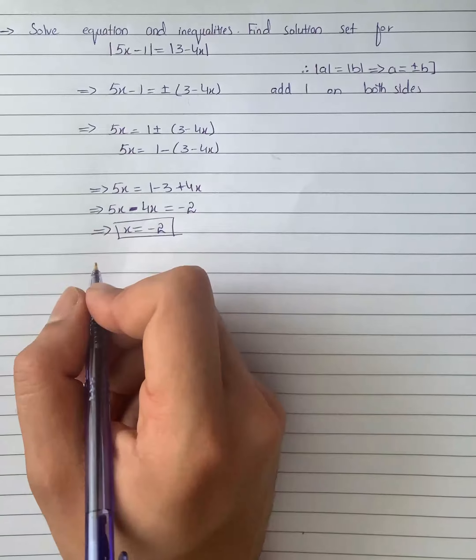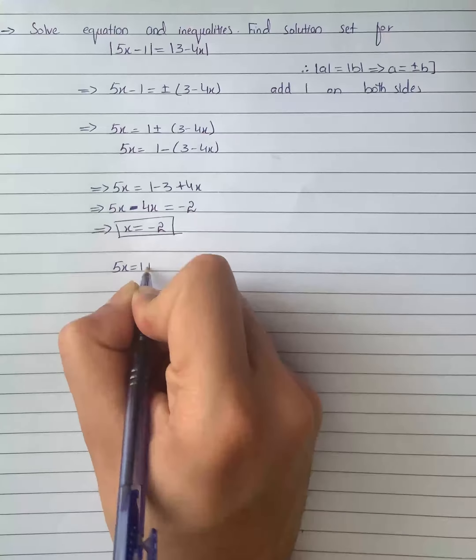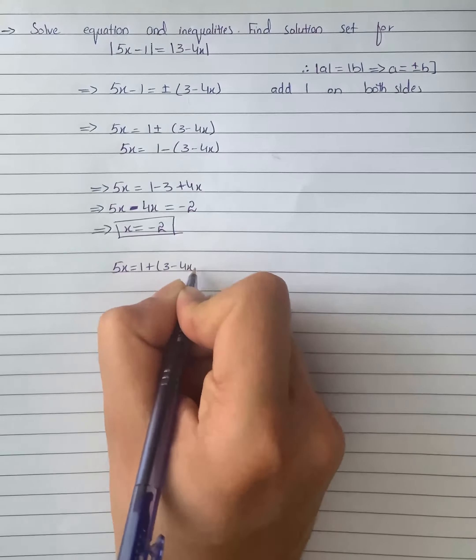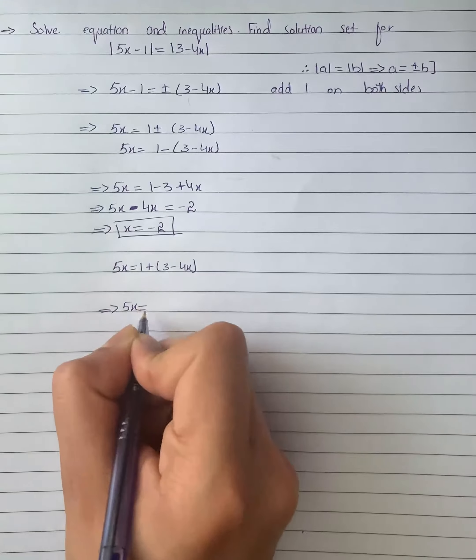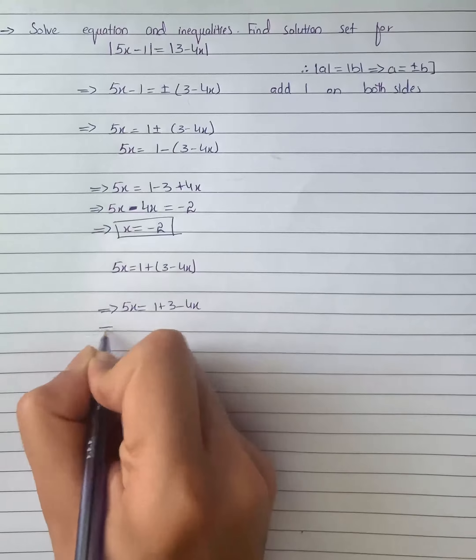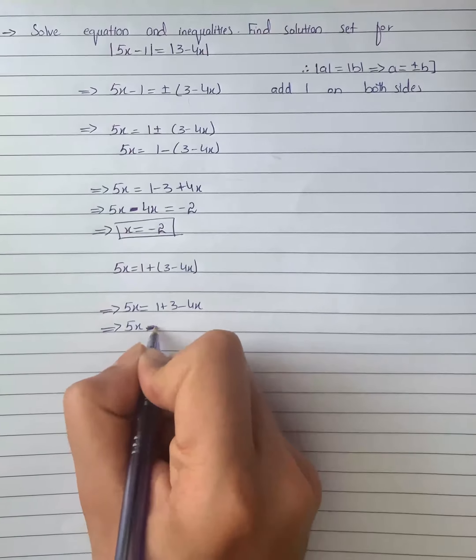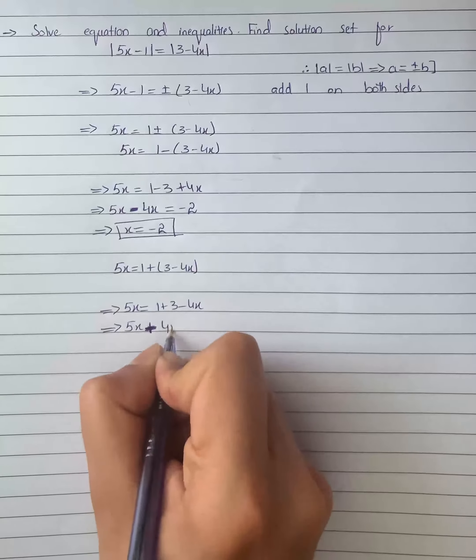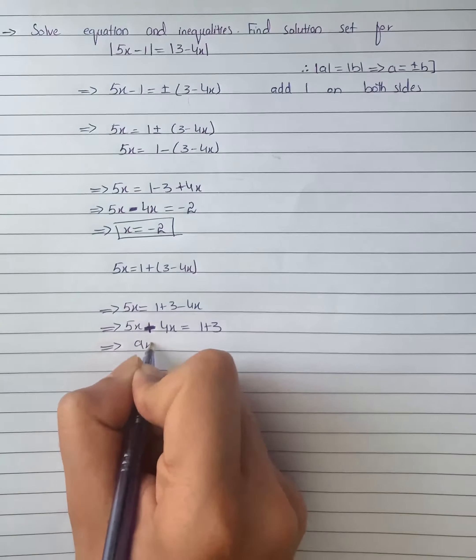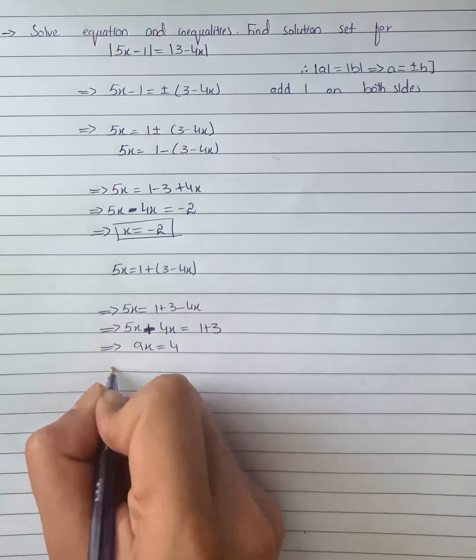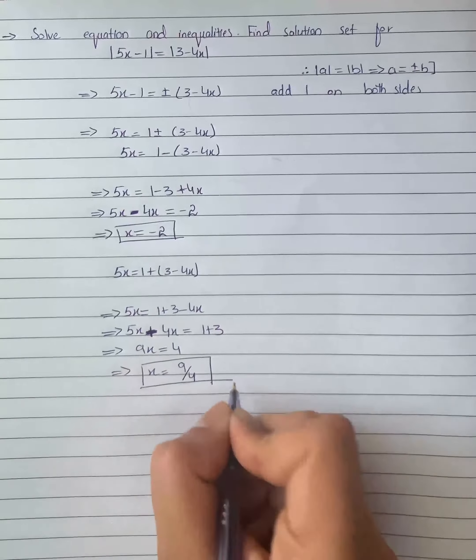Now let's take the second possibility. It will be 5x = 1 + 3 - 4x. It further gives us 5x + 4x = 1 + 3. Then it becomes 9x = 4 and then x becomes 4/9. This is the second possibility.